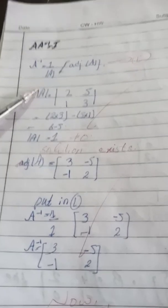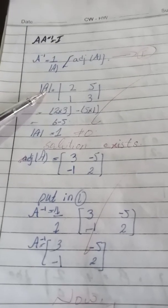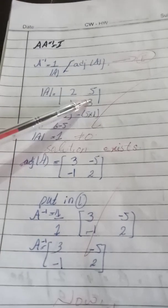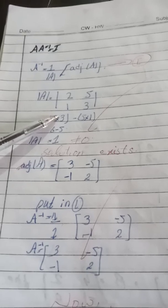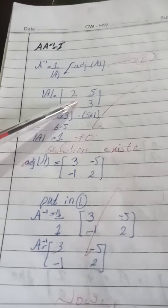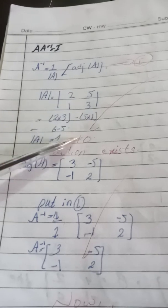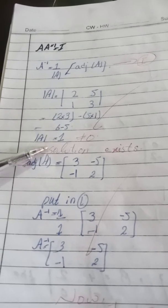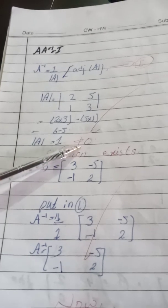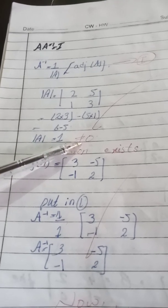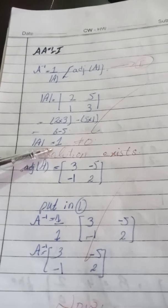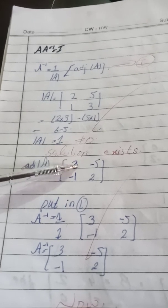First of all we will calculate the determinant of A. The solution is: 2 times 3 equals 6, minus 5 times 1 equals 5, so 6 minus 5 equals 1. The determinant of A is 1, which is not equal to 0.